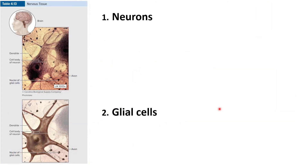You already know that there are four types of tissue: epithelial tissue, connective tissue, muscle tissue, and nervous tissue. And there are two types of nervous tissue: neurons and glial cells.